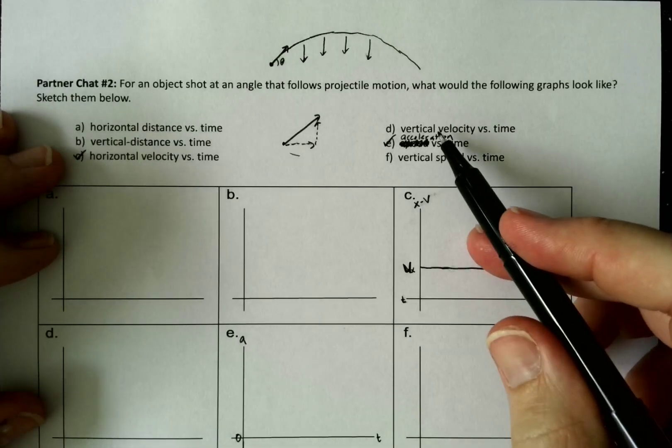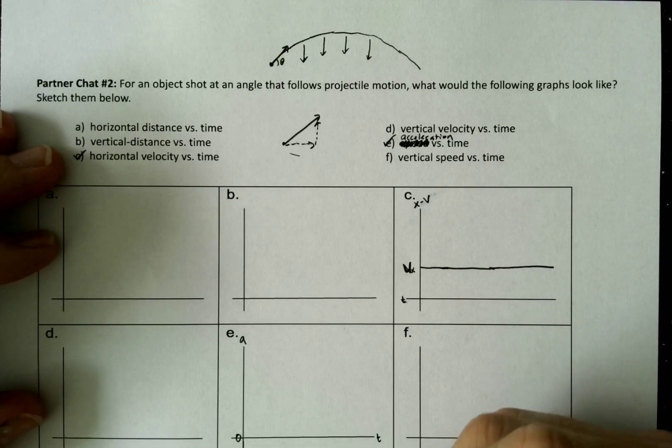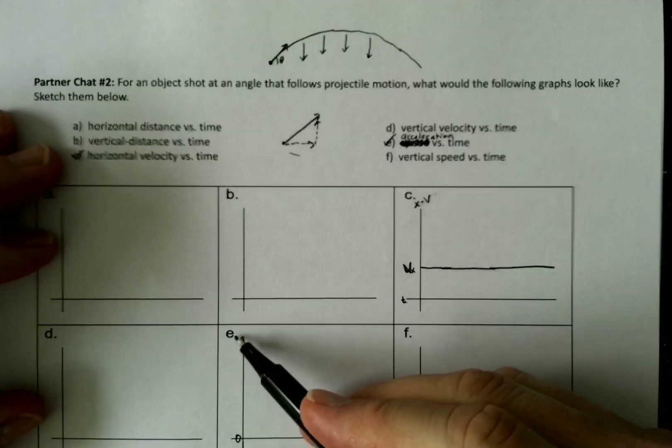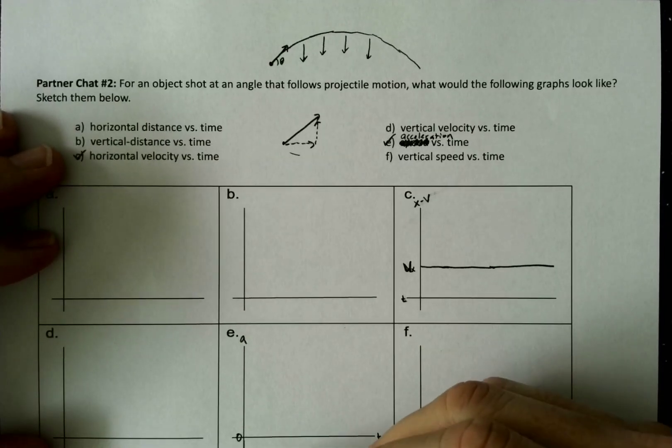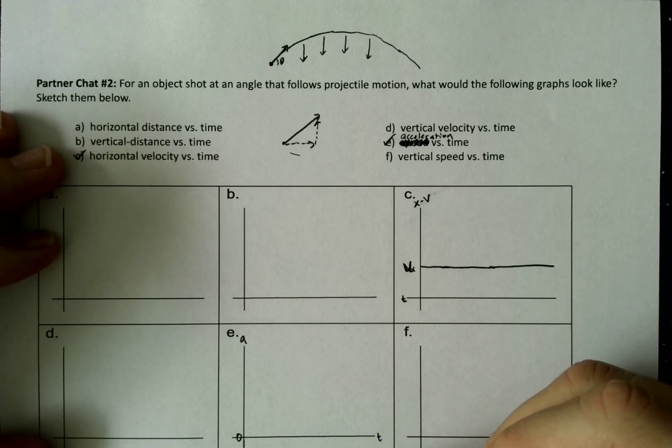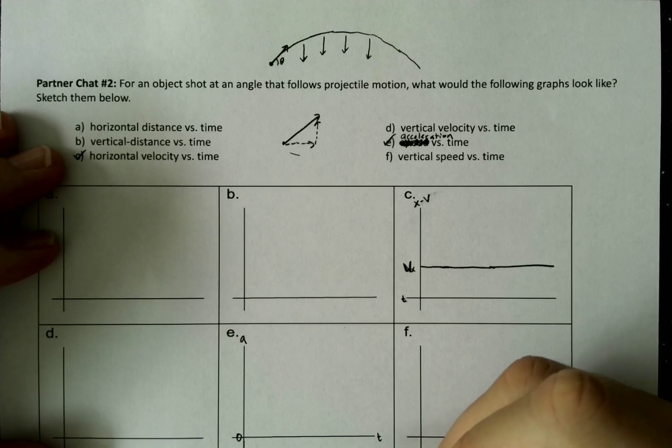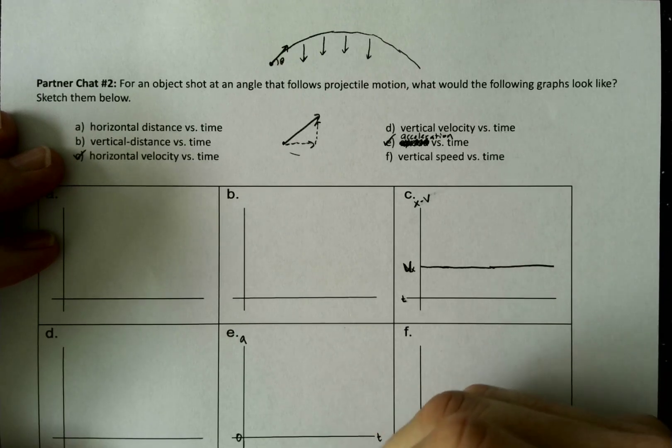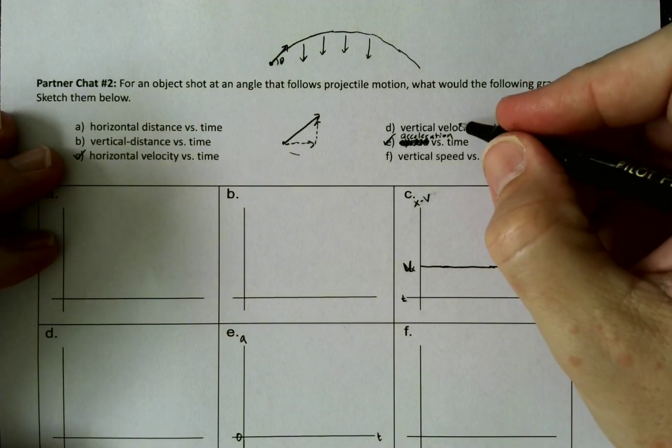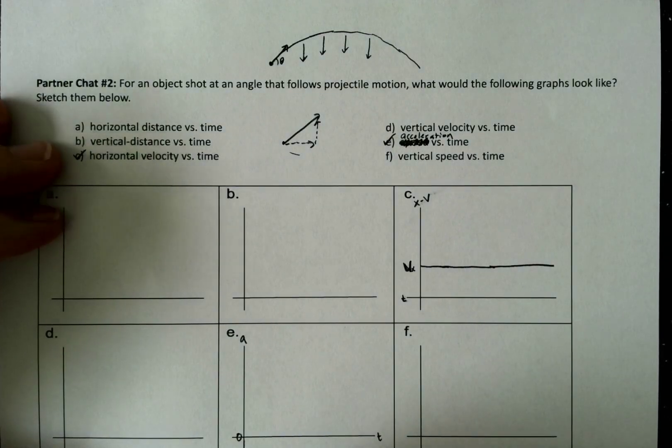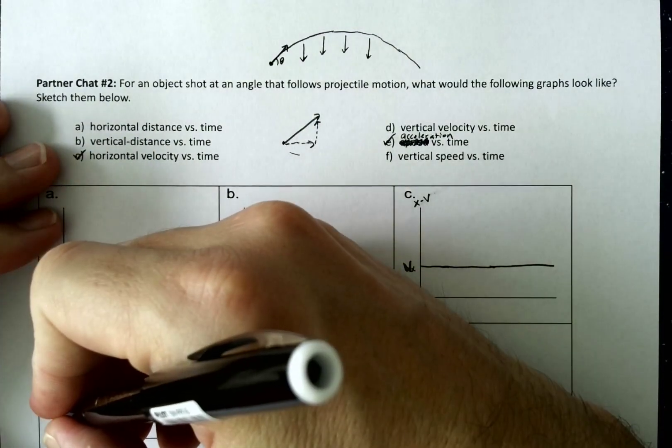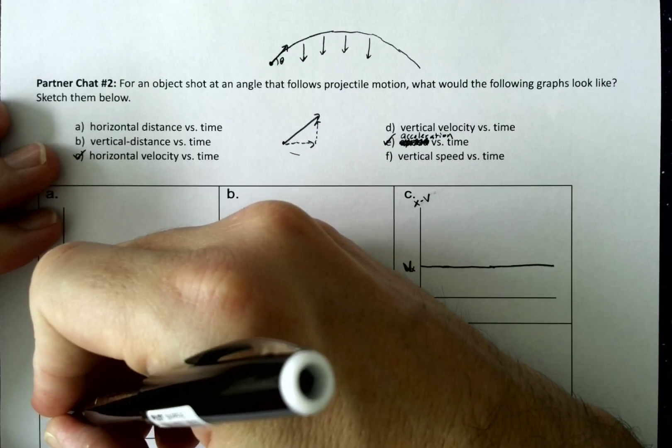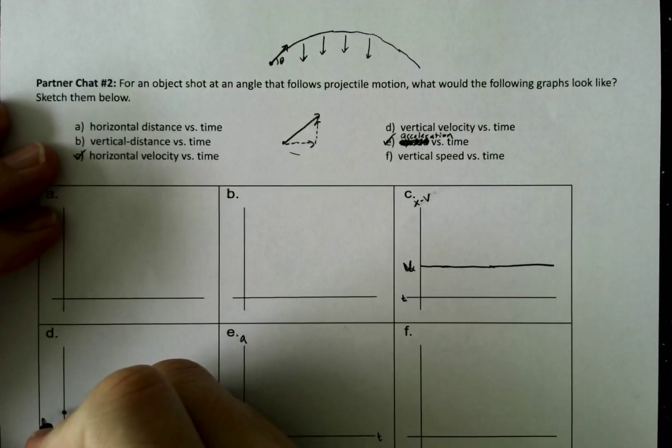Let's look next at vertical velocity versus time. I think that one's probably the next easiest because we know the acceleration. The acceleration is a constant negative g. So if the acceleration is constant, acceleration is the slope of the vertical velocity versus time graph. And so since that is all vertical, then the acceleration of our velocity versus time should look something like this. It should start at some value, whatever that initial vertical velocity is.